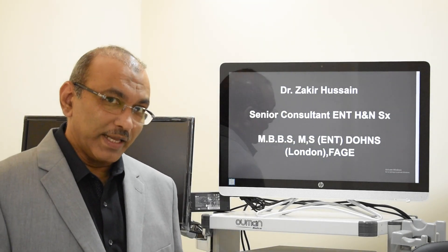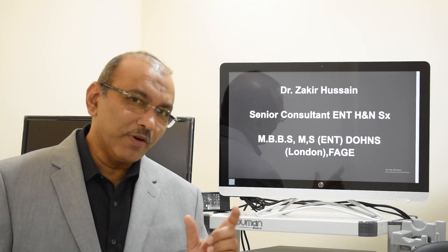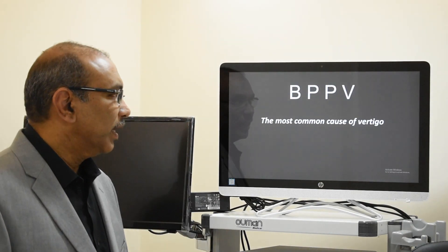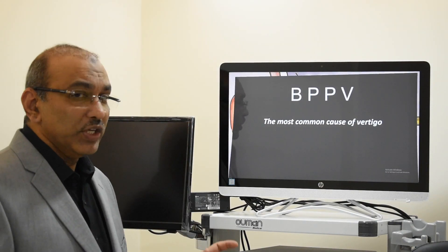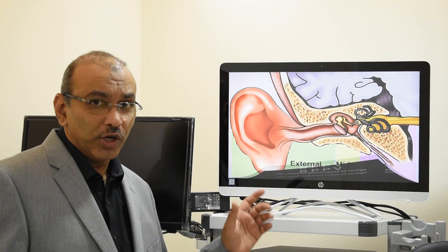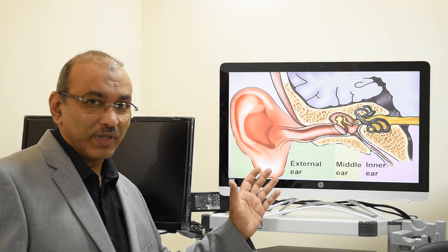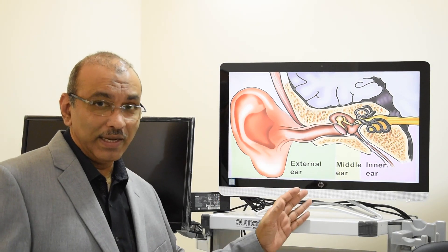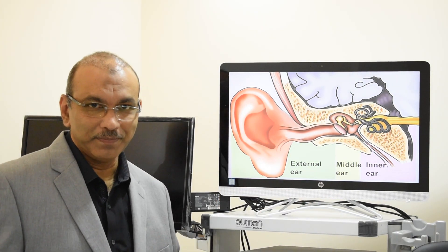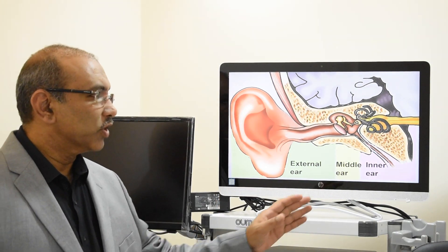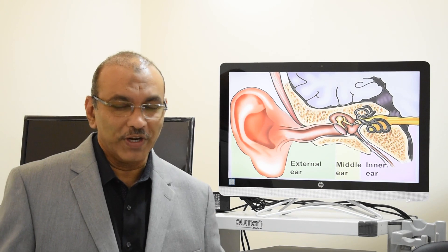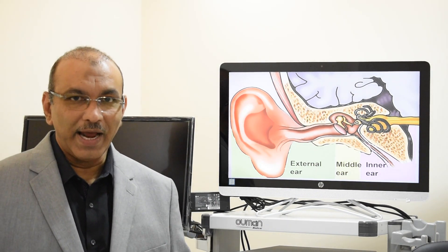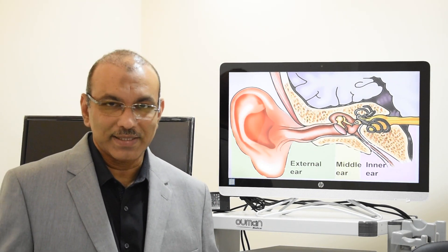Before starting, I would like to brief about the anatomy of the ear. The ear is divided into three parts: external ear, middle ear, and the inner ear. The inner ear has got two functions — one is hearing and the other is balance.